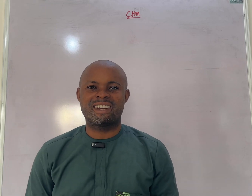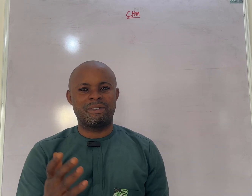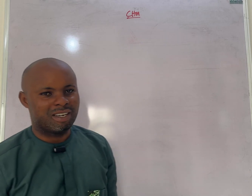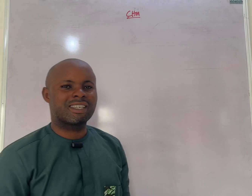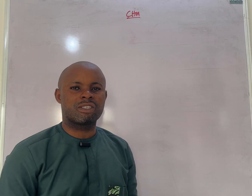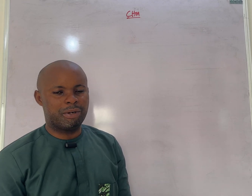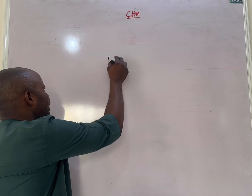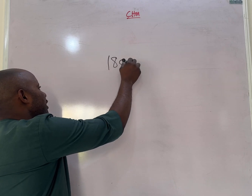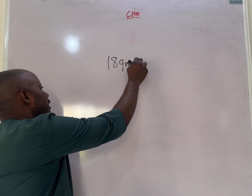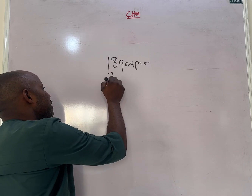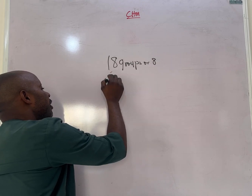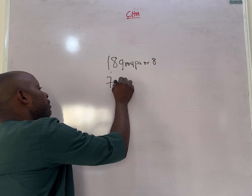Welcome to my channel once again, this is Tisha Tari. In our previous lesson we treated the periodic table. We were made to understand that the periodic table contains groups and periods — we have 18 groups and seven periods.